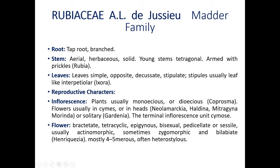Now let us start with the root. In this family, since it belongs to the dicots, there is a taproot system, and the root is branched. Stem is aerial — that means above the ground. Herbaceous means soft and green, or sometimes solid. Young stem is tetragonal — not cylindrical but showing a four-angled stem, that is why it is called tetragonal stem — or with prickles; for example, Rubia.